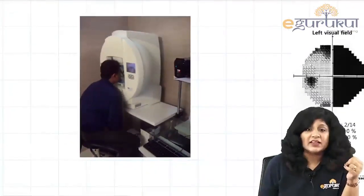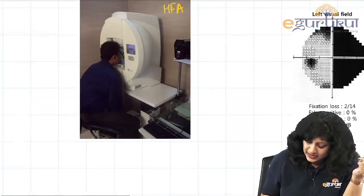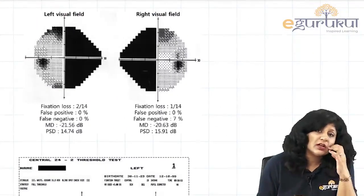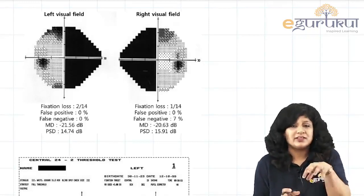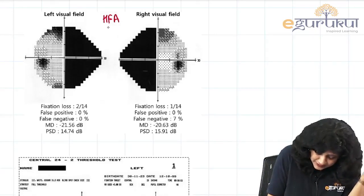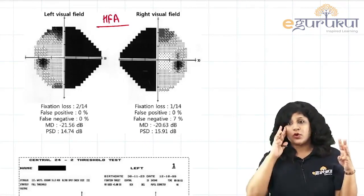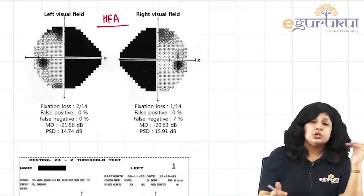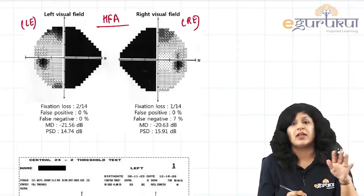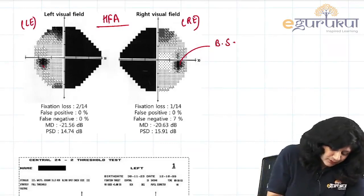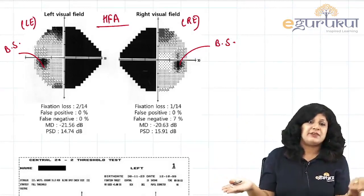The Humphrey's Field Analyzer produces a characteristic chart. It is mainly static perimetry. The right eye field is on the right side and left eye on the left — identifiable by the position of the blind spot, which is always in the temporal field. This temporal field position of the blind spot helps identify which eye's field is which.